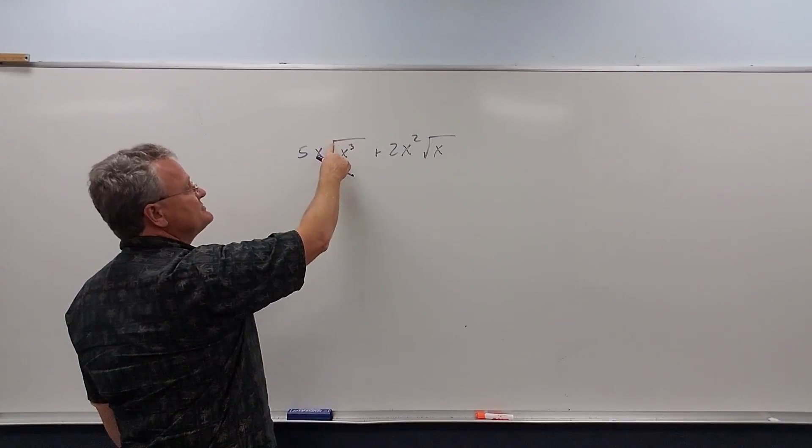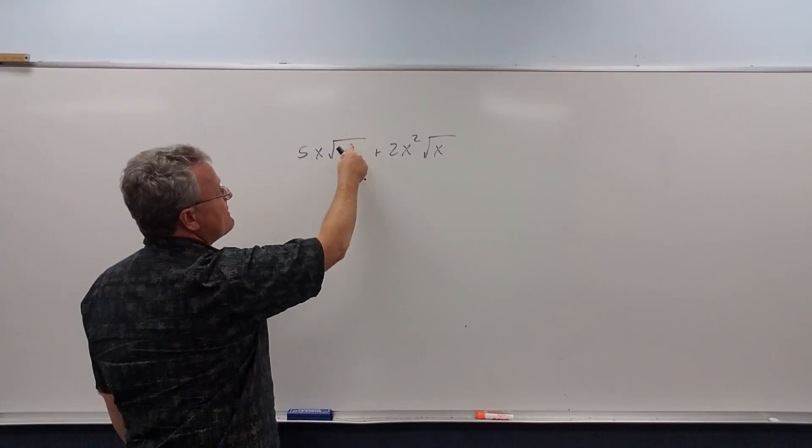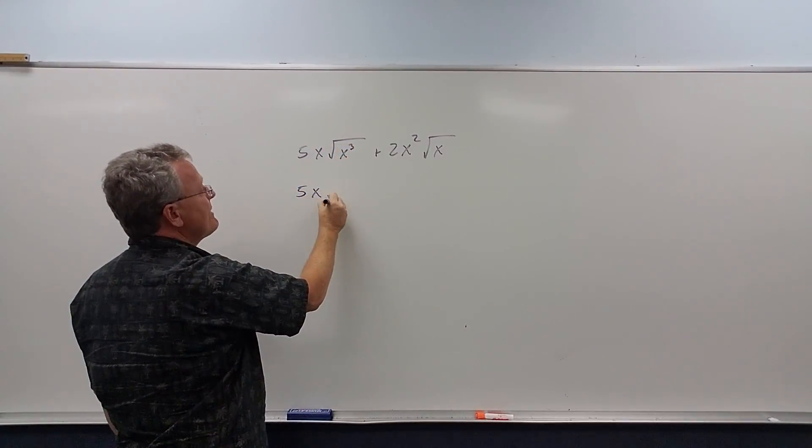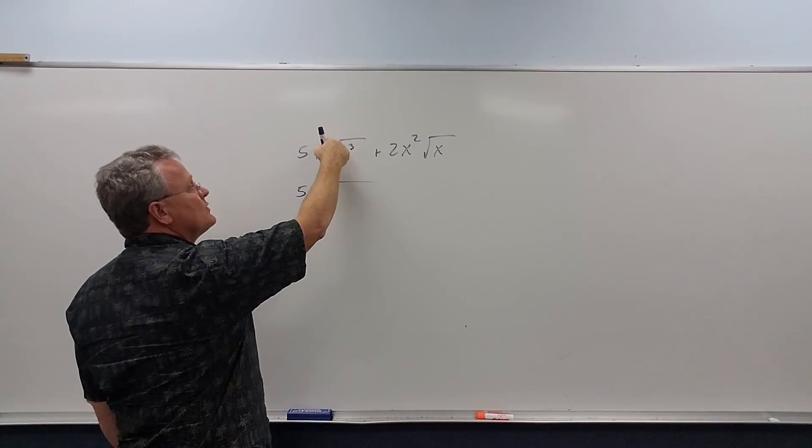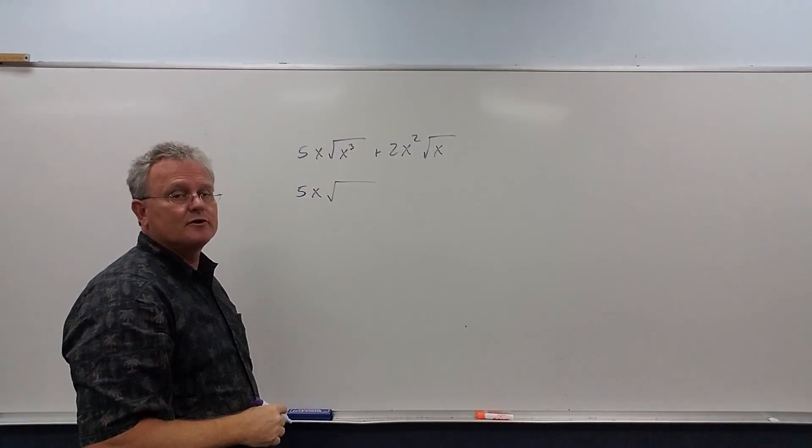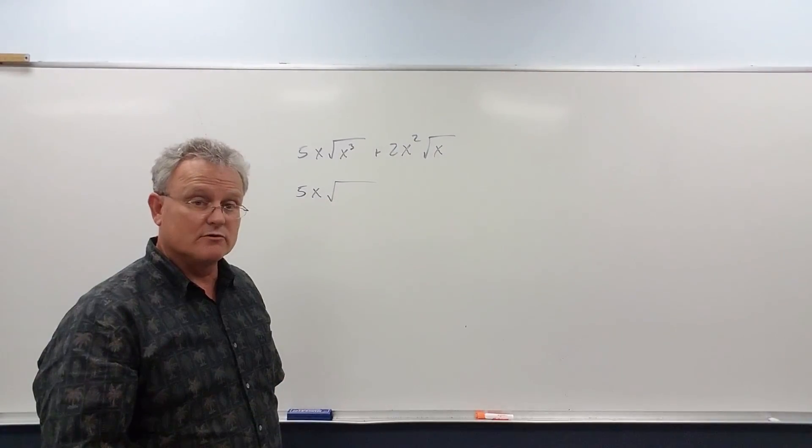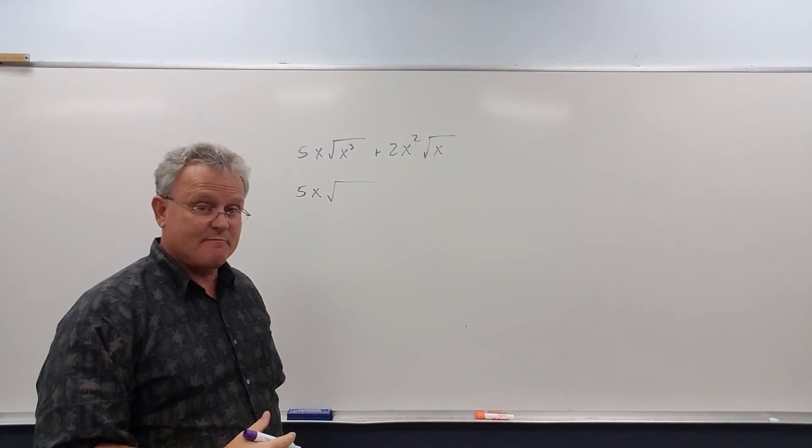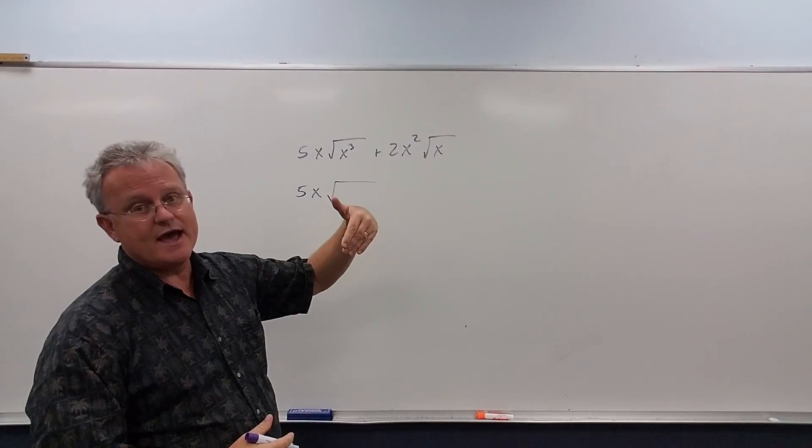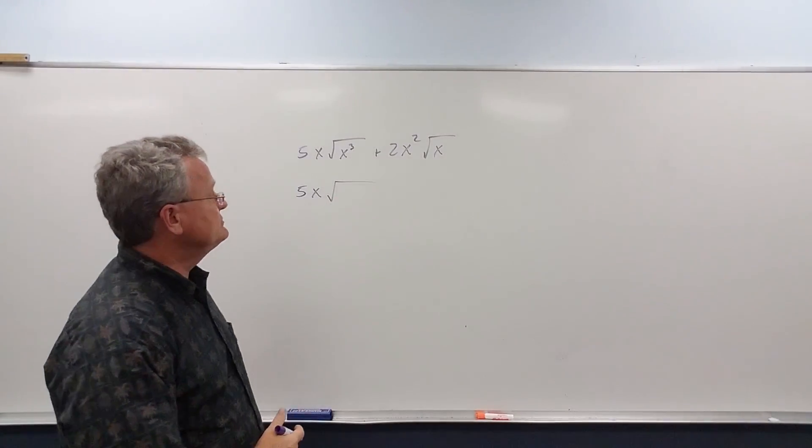We learned how to simplify square roots with powers earlier. If you remember, when we have a square root, we want the power to be even because the square root is the same as the half power, and when we multiply by a half, that's the same as dividing by 2.